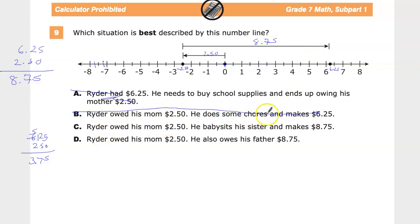Ryder owed his mom $2.50. He babysits his sister and makes $8.75. So that's pretty good. He owed her the $2.50. So that's what this represents. He gets up to $6.25. So I'm going to say it's probably this one. Ryder owed his mom $2.50. He also owes his father $8.75. So that would be more negative. So that's not it either. So the answer to this one is C.